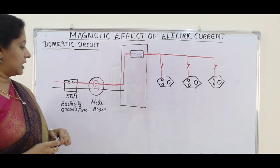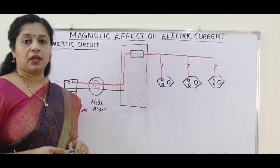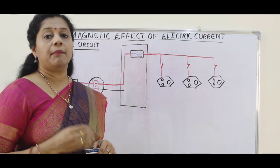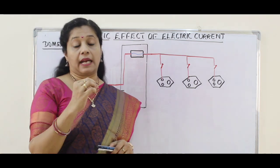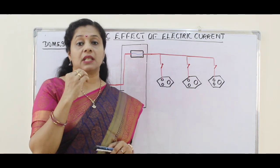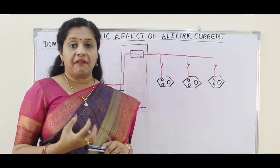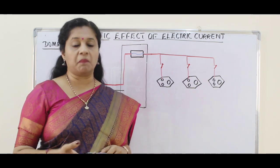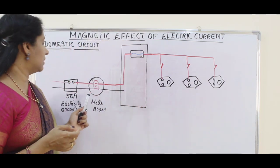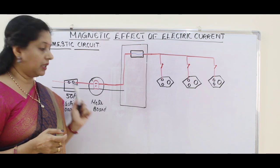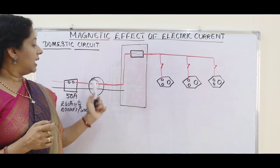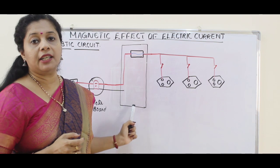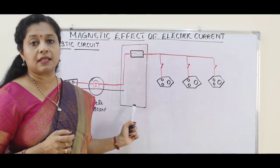From there it is connected to a meter board. The meter board is also owned by the electricity board because they want to calculate how much energy we are consuming every month, and according to that we have to pay the money. These two — the fuse box and meter board — are fitted by them. Now from here these two wires enter into the domestic circuit system.